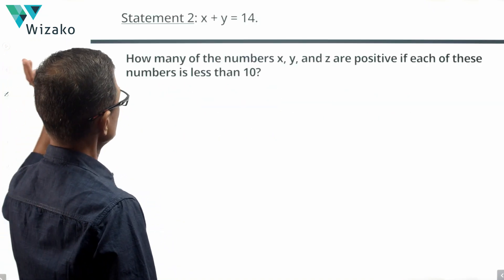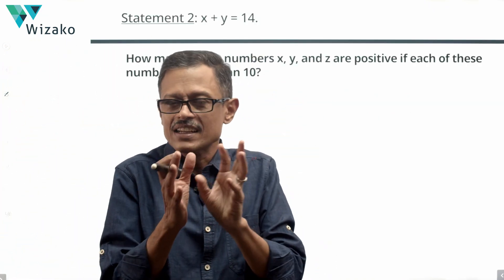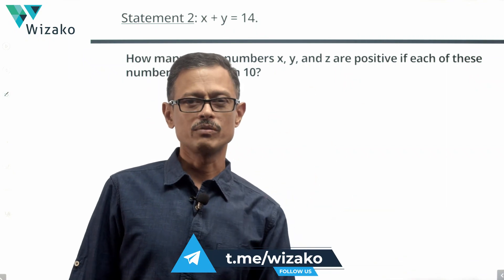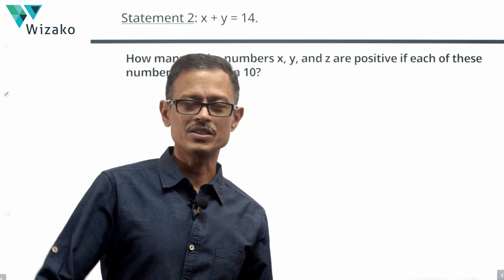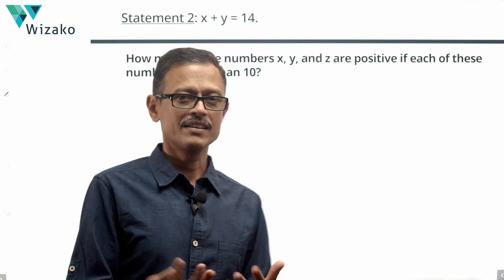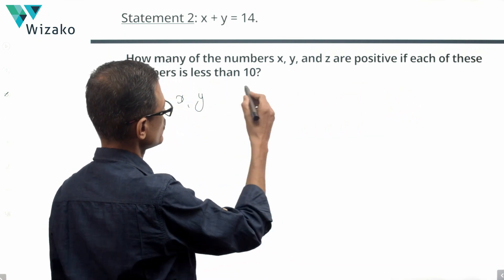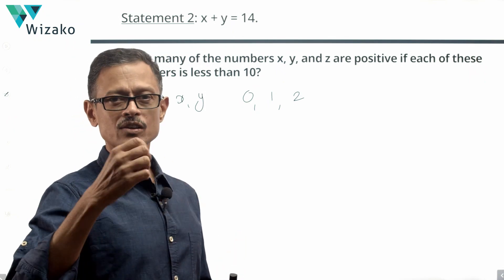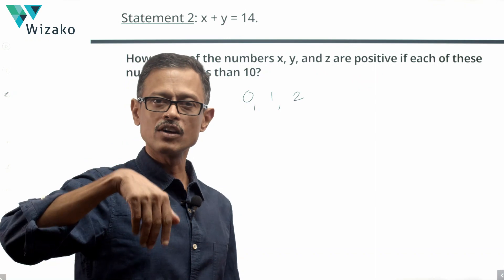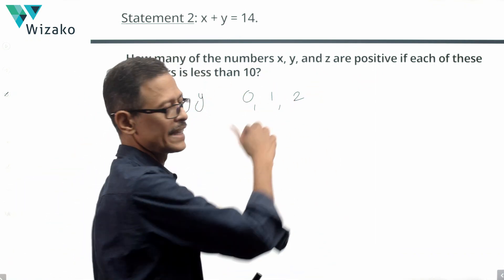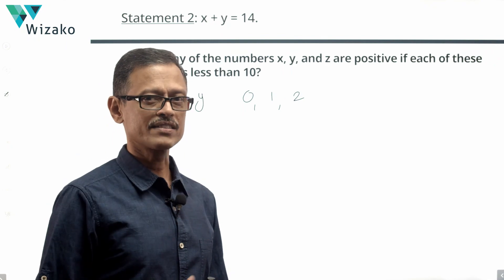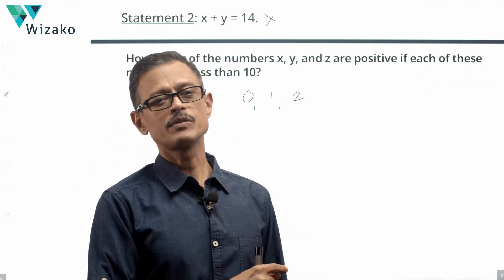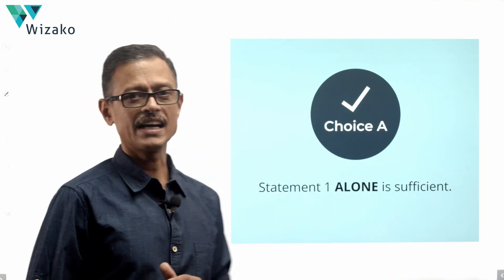Take a look at statement two: x plus y equals 14. Even if you could establish something conclusive about x and y — whether both are positive, or one is positive and one negative — do you have any information about z? Z could be a positive number, which would increment the count, or z need not be positive. Without knowing what z is, we don't have a conclusive answer. So statement two alone is not sufficient. With statement one alone being sufficient and statement two not sufficient, the answer to this question is Choice A.